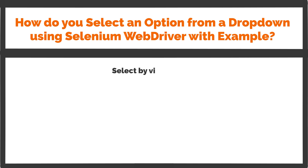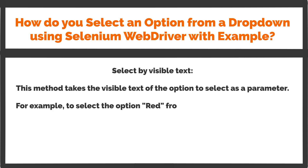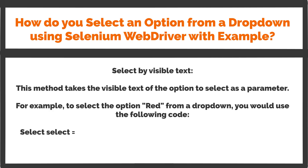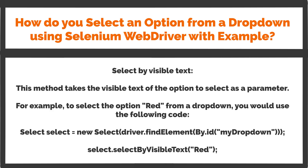Select by Visible Text: This method takes the visible text of the option to select as a parameter. For example, to select the option 'Red' from a drop-down, you would use the following code: Select select = new Select(driver.findElement(By.id("myDropdown"))); select.selectByVisibleText("Red");